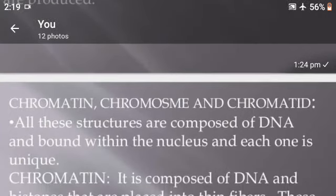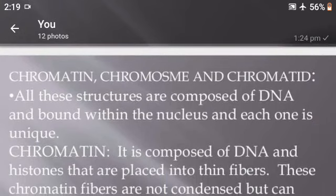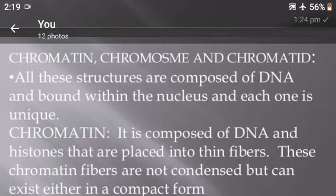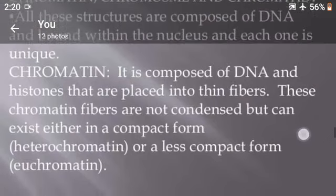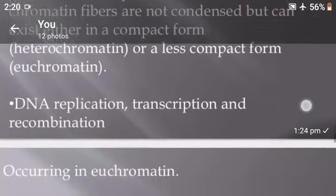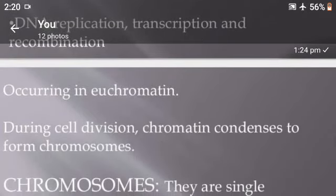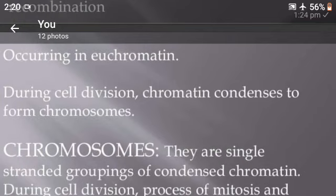Chromatin, chromosome, and chromatids: all these structures are composed of DNA and are bound within the nucleus, and each one is unique. The nucleus is situated in the cytoplasm. Chromatin is composed of DNA and histones arranged into thin fibers. These chromatin fibers are not condensed but can exist in either a compact or open form. DNA replication, transcription, and recombination occur in euchromatin. During cell division, chromatin condenses to form chromosomes.